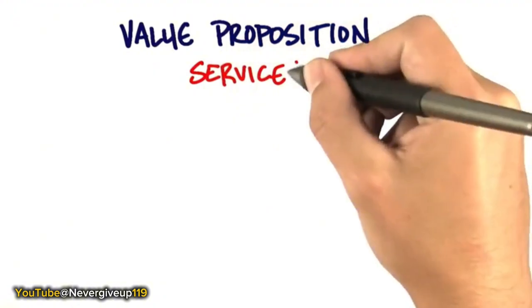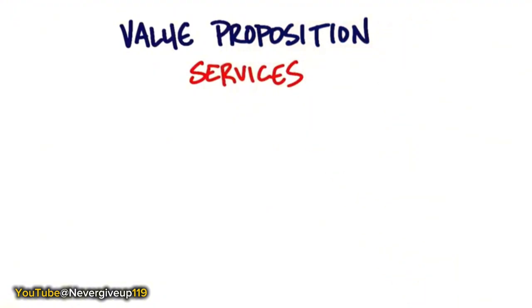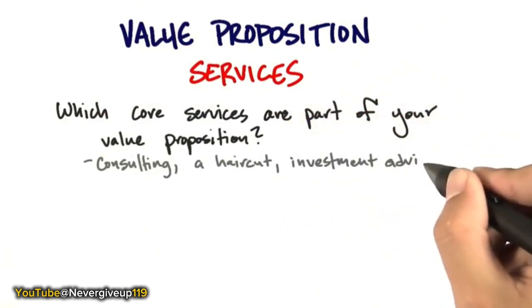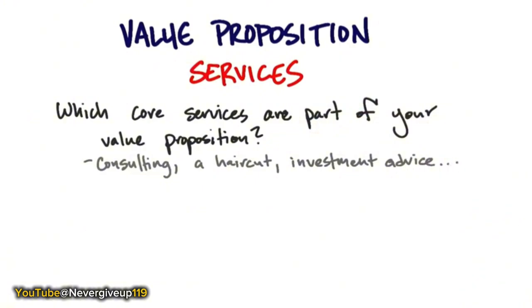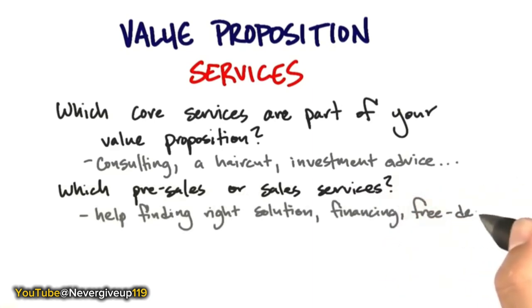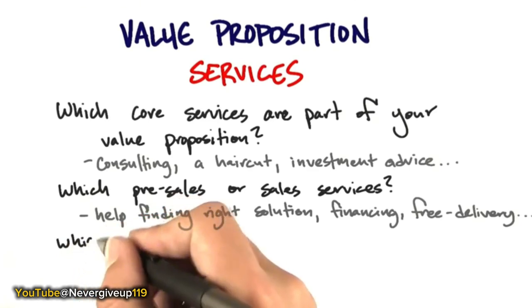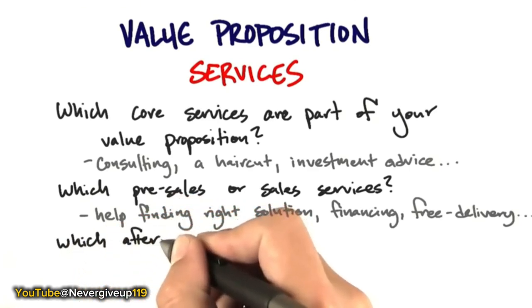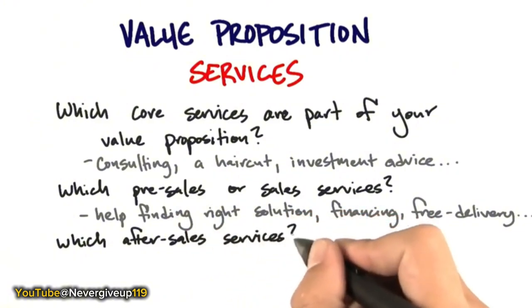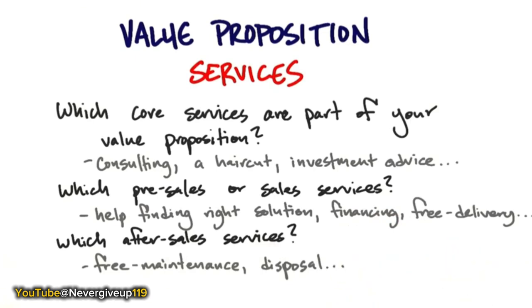A value proposition for a company selling services is similar — you just need to ask what are the core services that are part of your value proposition: consulting, haircut, investment advice. If you're selling software or hardware, you could have separate services — pre- and post-sale services, finding the right solution, financing, free delivery. Amazon makes a great business because they can do one-day or two-day premier delivery service. Services that might seem ancillary or add-ons actually make your products look better than competitors. After-sale services like free maintenance and disposal also add up to what your product features do.